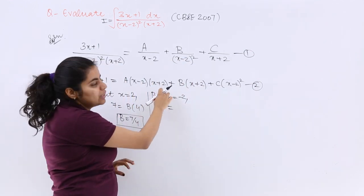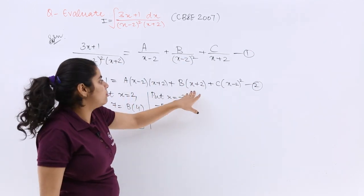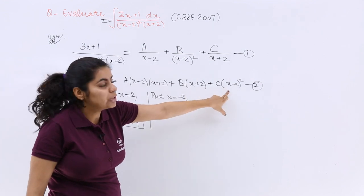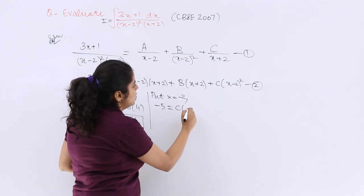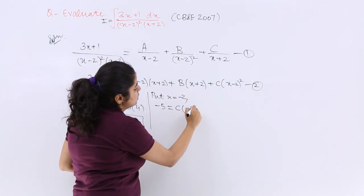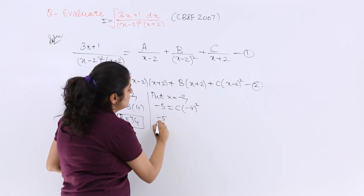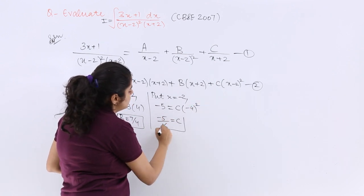Minus 2 plus 2 vanishes but here it remains. So it is C times (minus 2 minus 2) which is minus 4 whole square. So minus 5 upon 16 is equal to your C.